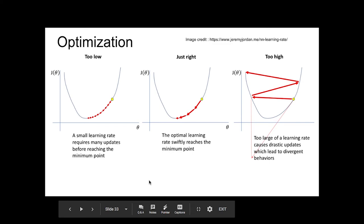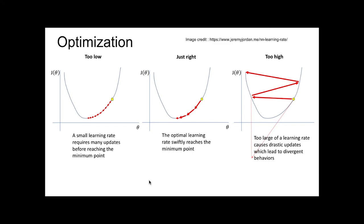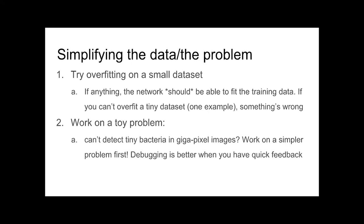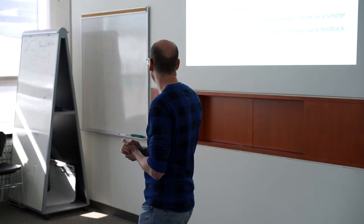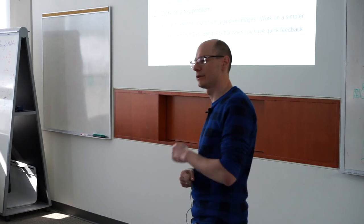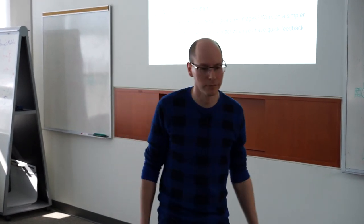Second: simplifying either the data or the problem. Possibly you're working on data that is five steps ahead of what anyone has tried to solve, and if you're using standard methods, try simplifying it into something more standard first. See if the standard tools work on standard data, then try switching. The first thing to try: overfit a small piece of data. If you're not able to overfit even one or ten training examples, something in your mechanism is wrong.